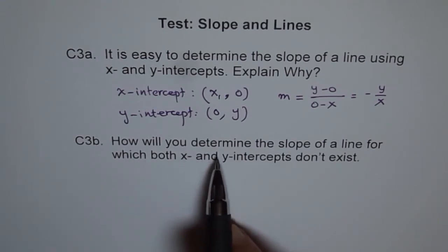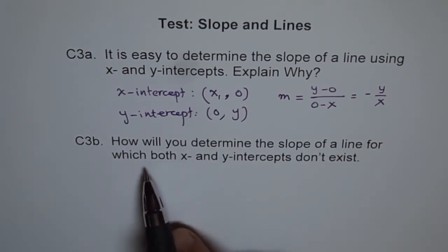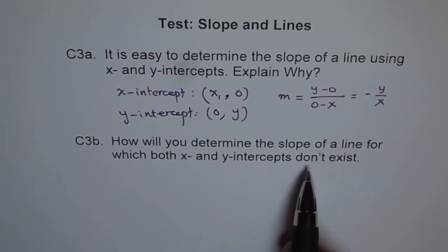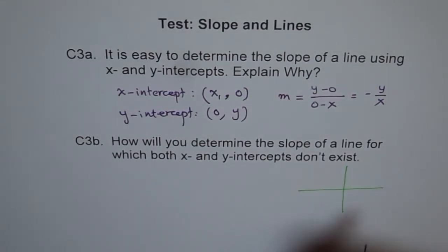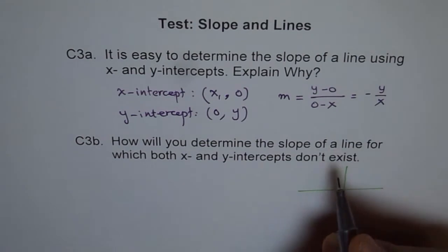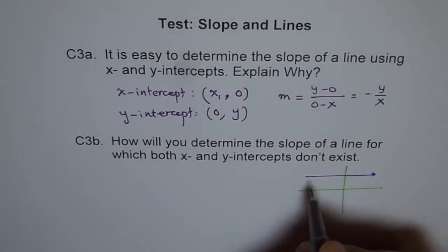How will you determine slope of a line for which both x and y-intercepts don't exist? So can you tell me when will they not exist? So it's possible, one of them, right? If the line is horizontal, then only one will exist, right?